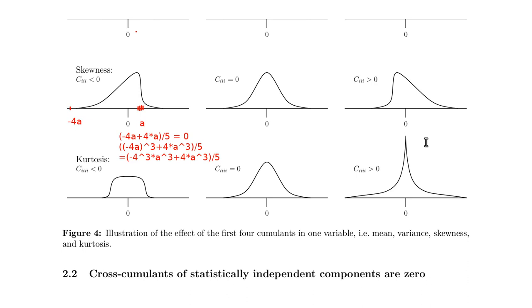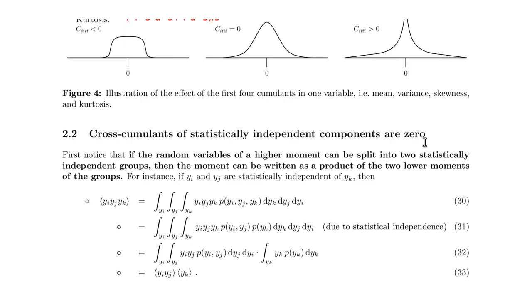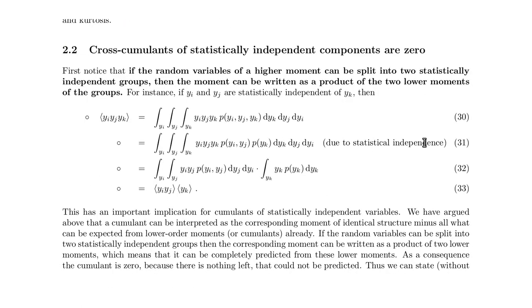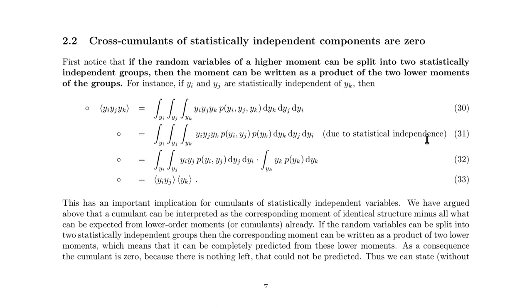Now, how do cumulants help with ICA and statistical independence? There is a nice property of cumulants: if you have statistically independent components, then the cross-cumulants are zero. More precisely, if the random variables can be split into two statistically independent groups, then the moments can be written as a product of the lower moments of each group.